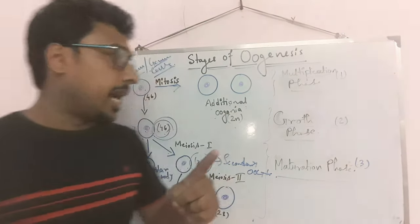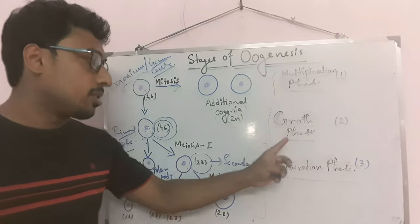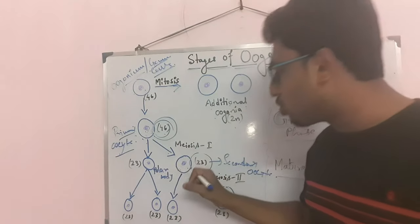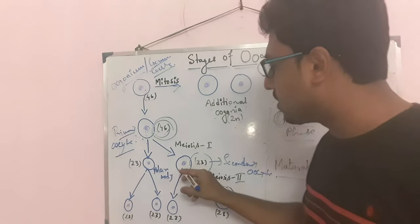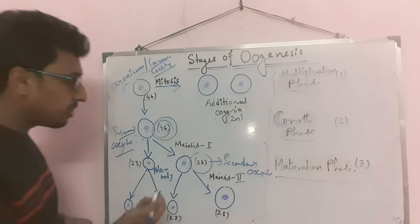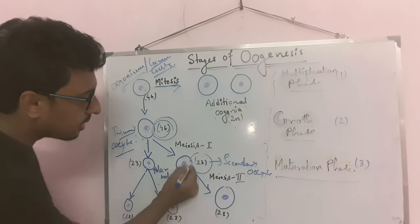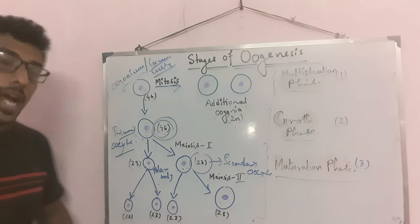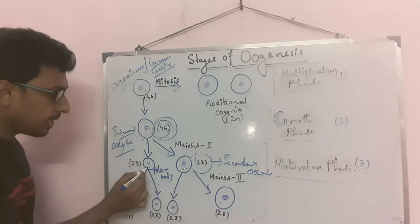In meiosis 2, which is the next stage of the maturation phase, from the secondary oocyte another polar body will also form. When from primary oocyte the secondary oocyte is forming, one polar body forms. That polar body will again divide and form two polar bodies. So ultimately there are three polar bodies formed in total during the maturation phase.